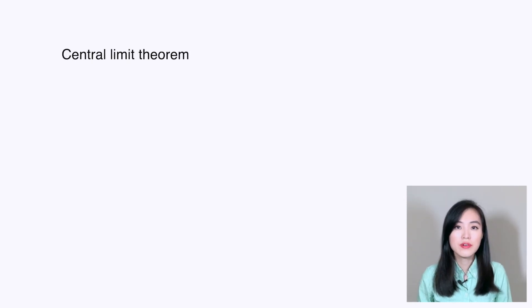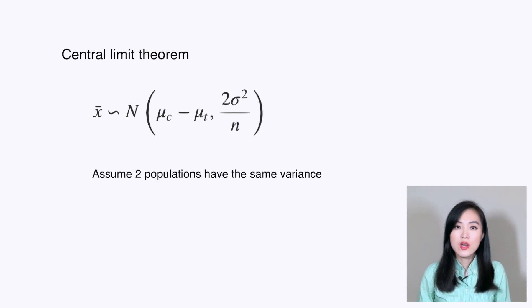Based on the central limit theorem, we know that the mean of the difference between μ_c and μ_t, x̄, is approximately normally distributed with mean μ_t minus μ_c and variance 2σ²/n, where σ² is the population variance and n is the sample size. For simplicity, we assume the two populations have the same variance.